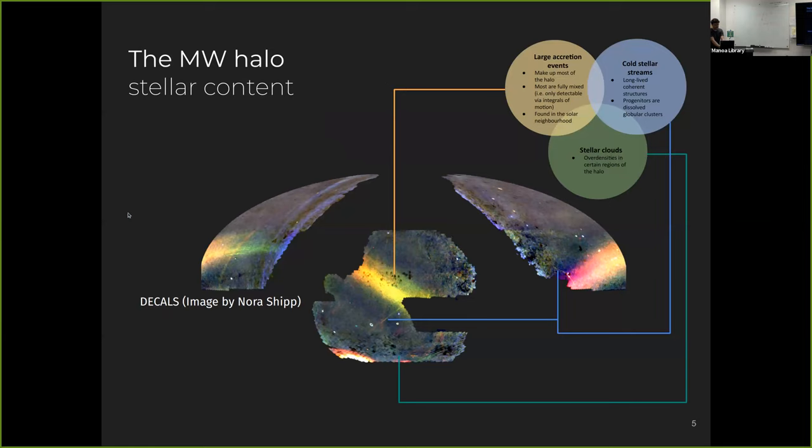So when we look at the Milky Way halo, so now this is an image of almost the whole sky shown in equatorial coordinates, where you can see now in the color scales basically the density of stars and different colors show the different distance slices from the sun. And you can clearly see that the cutout here in the image is the Milky Way plane.